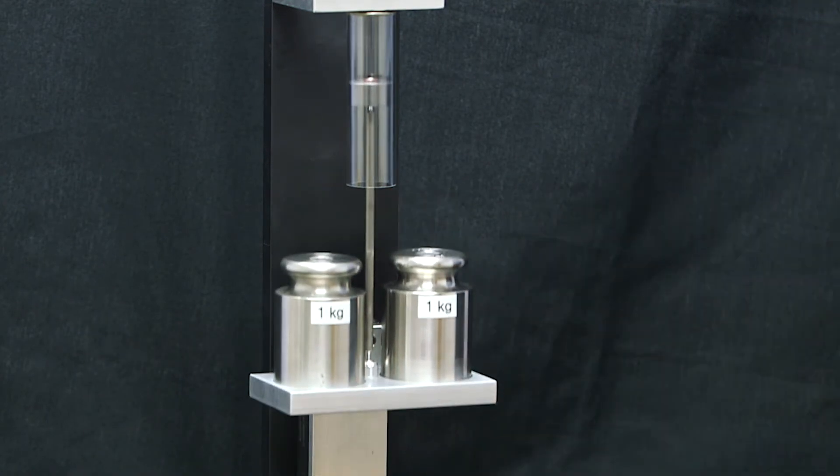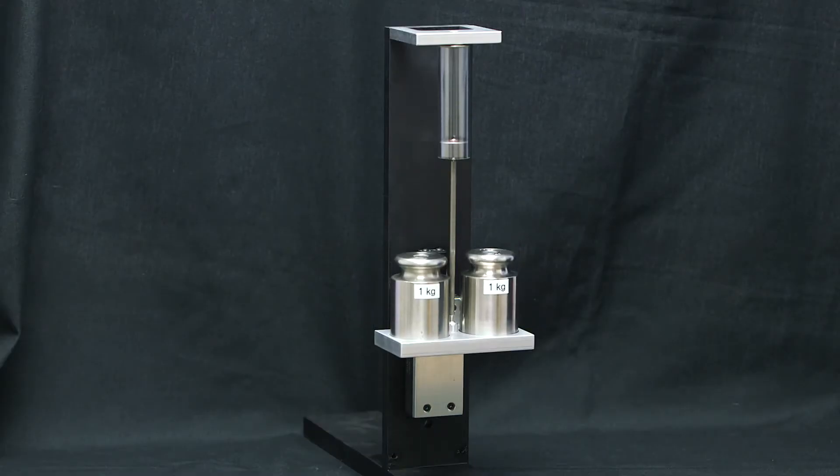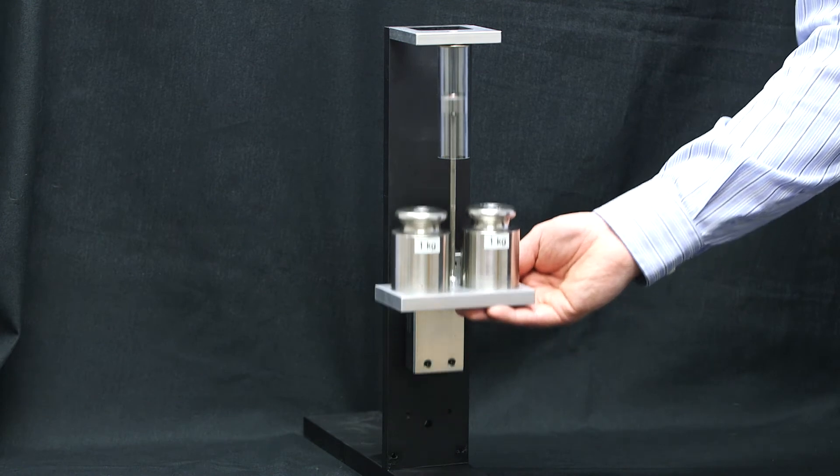Initially, the pressure inside the dashpot is the same as outside the dashpot. As the weight falls, the pressure inside the dashpot drops below atmospheric, creating a partial vacuum.